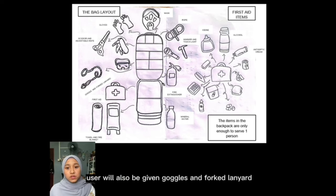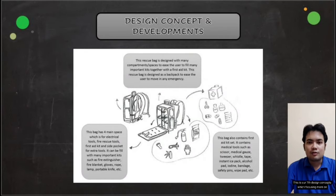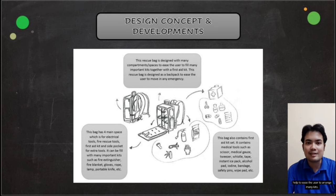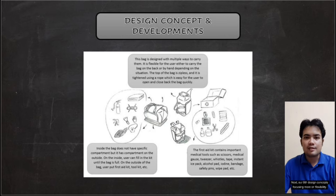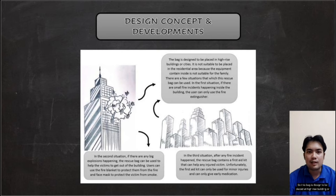The seventh design concept focuses on compartment arrangement, with many well-organized compartments to help users store and retrieve kits easily. The eighth design concept focuses on flexibility, allowing the user to carry the bag either on their back or by hand. The ninth concept focuses on style and technology — this bag features a red blinking light to help users find it in dark conditions. It is designed for high-rise buildings or city buildings, and is not recommended for residential areas or family use due to the equipment inside.